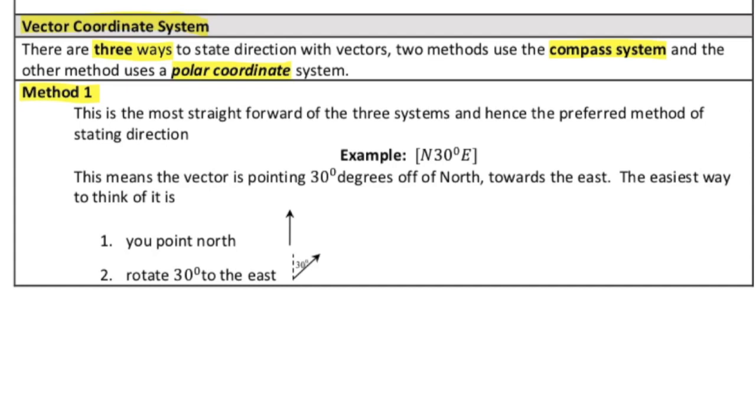Method one, and this is my favorite, and the one that I find to be the most straightforward, is a type of compass-based system. For example, let's say we have this direction here. We're going to parse what those things mean. And to do that, I'm going to draw a compass rose. I mean by a compass rose is just the north, south, east, and west directions.